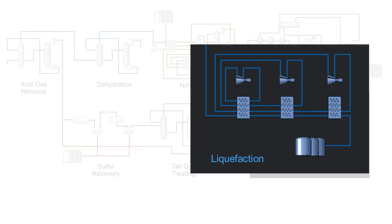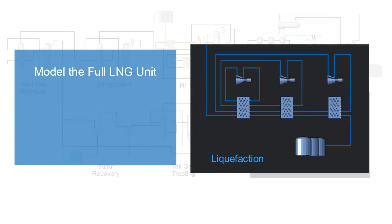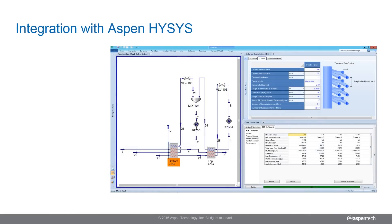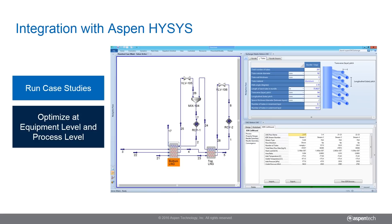Factors within the plant such as ambient temperatures, performance of units, and recycles can impact the heat exchangers, especially those with sensitive temperature approaches. By modeling the entire LNG process, better predict the impacts of operational changes. In addition, use Aspen HYSYS or Aspen Simulation Workbook to run case studies to better understand the equipment and what's occurring at the process level.